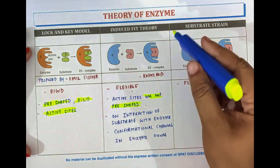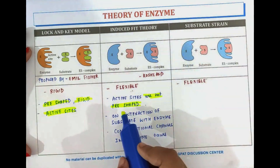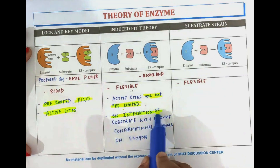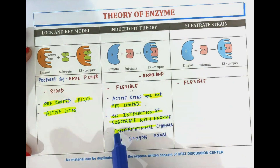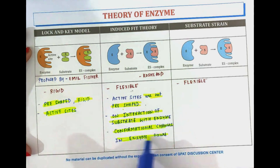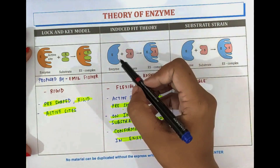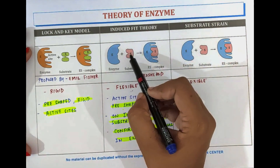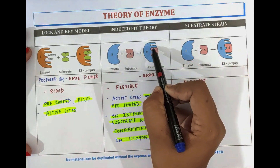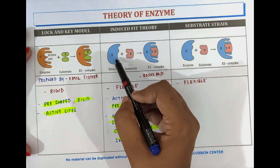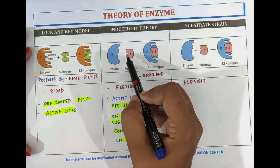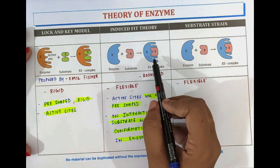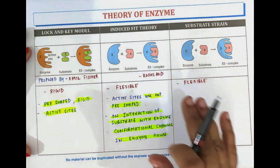Conformational changes in the structure of the enzyme occur. In this theory of induced fit, active sites are not pre-shaped. On interaction of the substrate with the enzyme, conformational changes occur. We can see that on interaction of the substrate with the enzyme, there are induced changes according to the structure of the substrate for proper binding. After binding, the ES complex is formed.